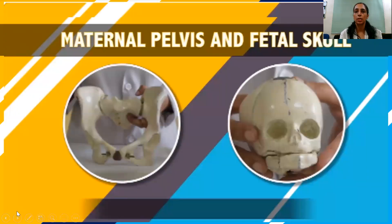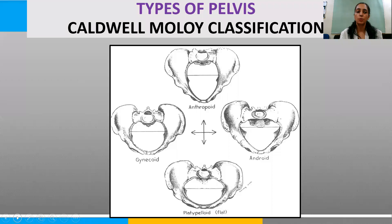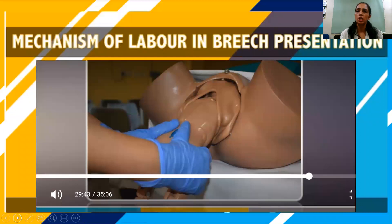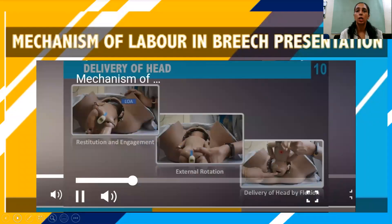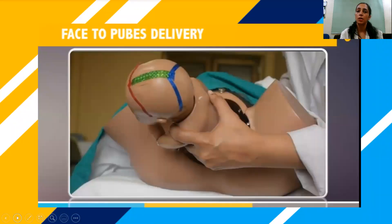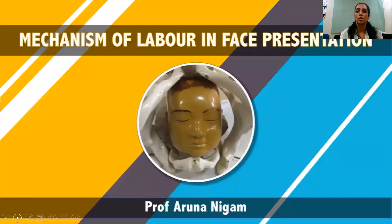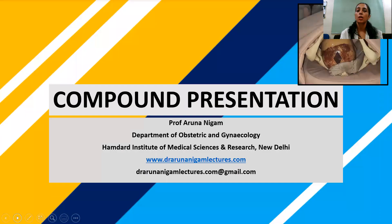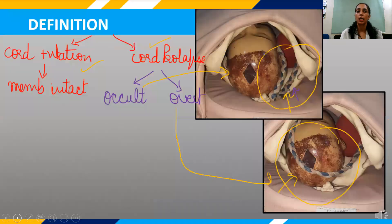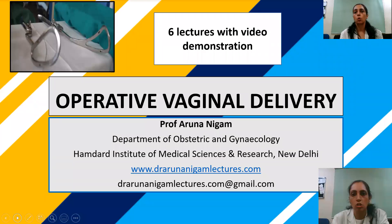The topics covered in these lectures are maternal pelvis and fetal skull, types of pelvis, mechanism of labor in breech presentation — each and everything regarding this has been covered in detail — mechanism of labor in occipital posterior positions, face-to-pubes delivery, brow presentation, face presentation, compound presentation, cord presentation and prolapse, transverse lie, and operative vaginal delivery, which has been covered in six lectures from history to demonstration to complications.